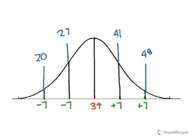We know that 34 is the mean, so you draw that in the middle. The standard deviation is 7, so you add or subtract 7 to get the standard deviation numbers.